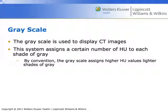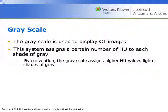Let's talk about the gray scale. This is what we generally use to display CT images. Occasionally, if we're doing 3D CT studies, we may choose a different scale to view different structures. The system assigns a certain number of Hounsfield units to each shade of gray. It functions exactly like an x-ray in that bone is going to be white — those are positive values — and air is going to be black — those are negative values on the Hounsfield scale. Higher attenuation value is light; lower attenuation value is black.